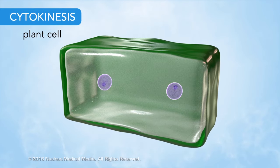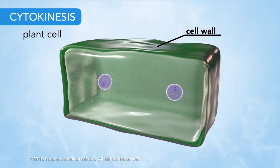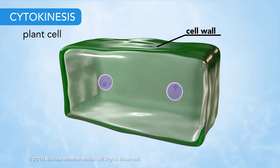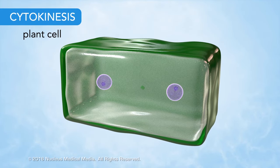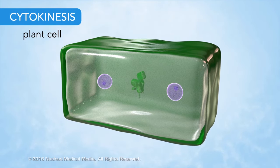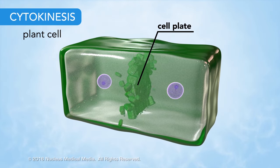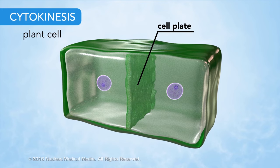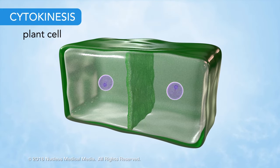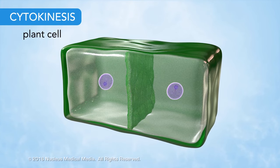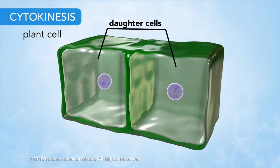In contrast, plant cells can't pinch in two, because they have a rigid cell wall surrounding their cell membrane. Instead, cell wall material assembles along the equator, forming a structure called the cell plate. The cell plate grows until it joins with the existing cell membrane, separating the two halves of the cell into daughter cells. Over time, new cell walls form between the two daughter cells.